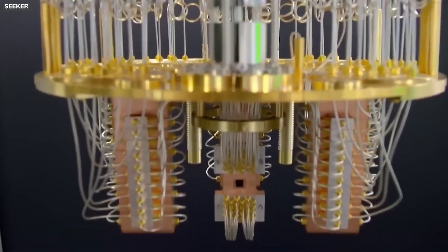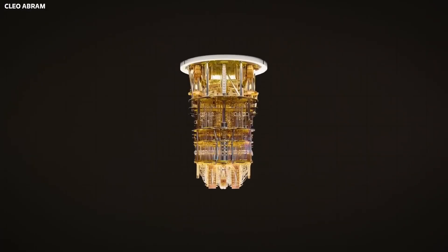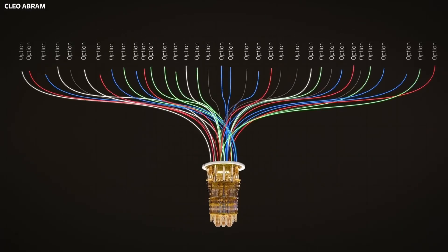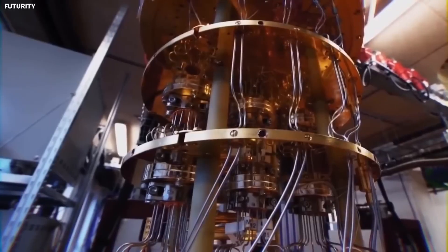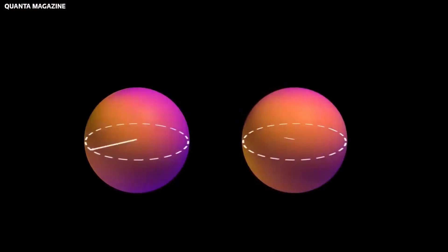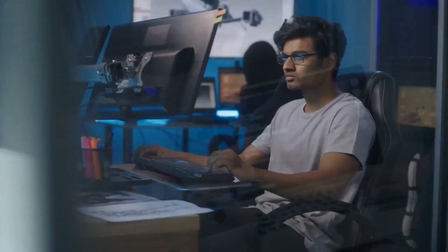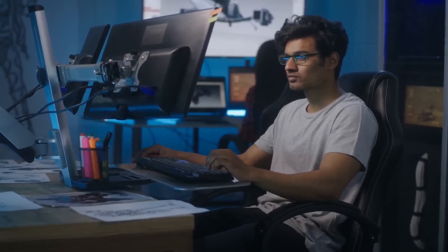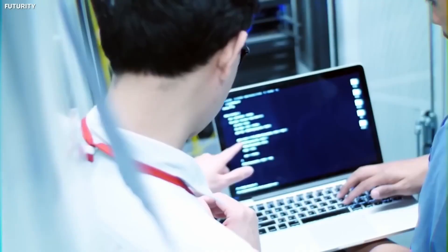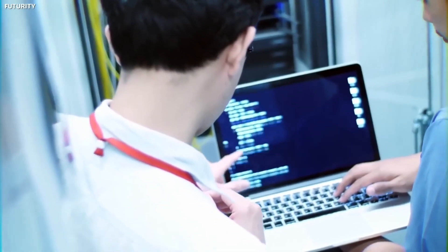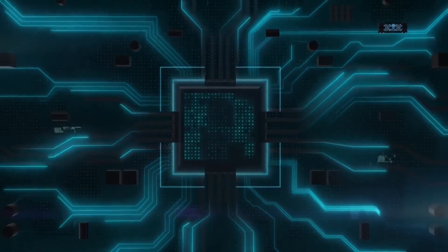Let's break it down. Imagine you're at a buffet with a plate in your hand. In a classical world, you could either choose the pasta or the salad. But in the quantum world, you get to enjoy both on the same plate at the same time. That's the magic of superposition. Qubits, the fundamental elements of quantum computers, exist in multiple states at once, performing complex calculations parallelly.